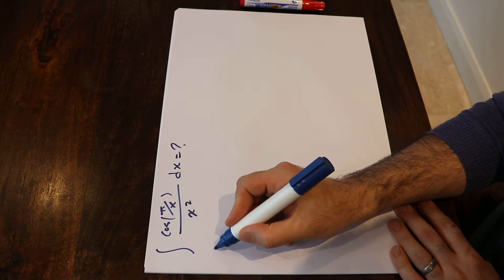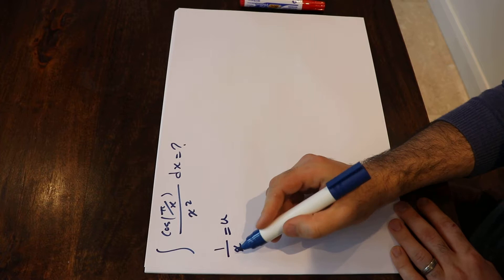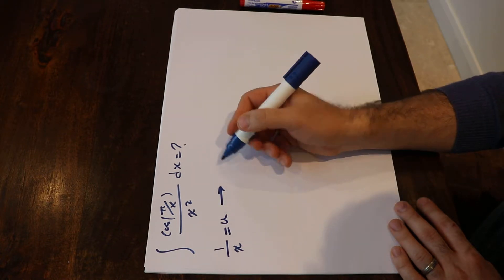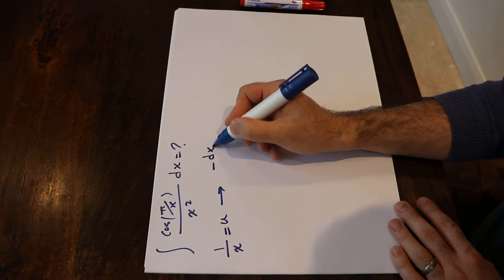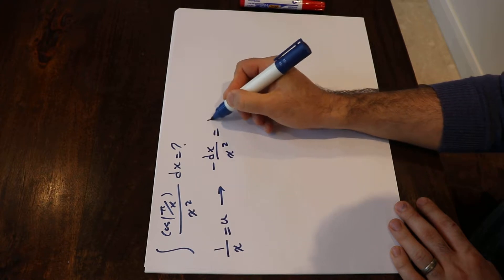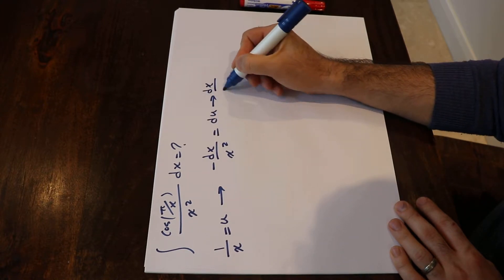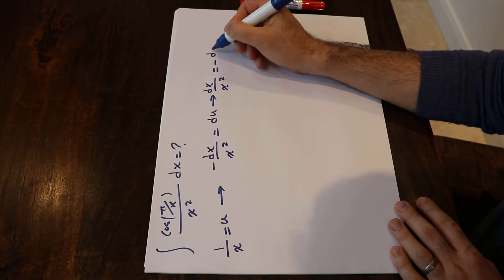If I define 1 divided by x as u and if I take the derivative from each side of this equation, you get minus dx over x² equal to du. In other words, dx over x² will be equal to minus du.